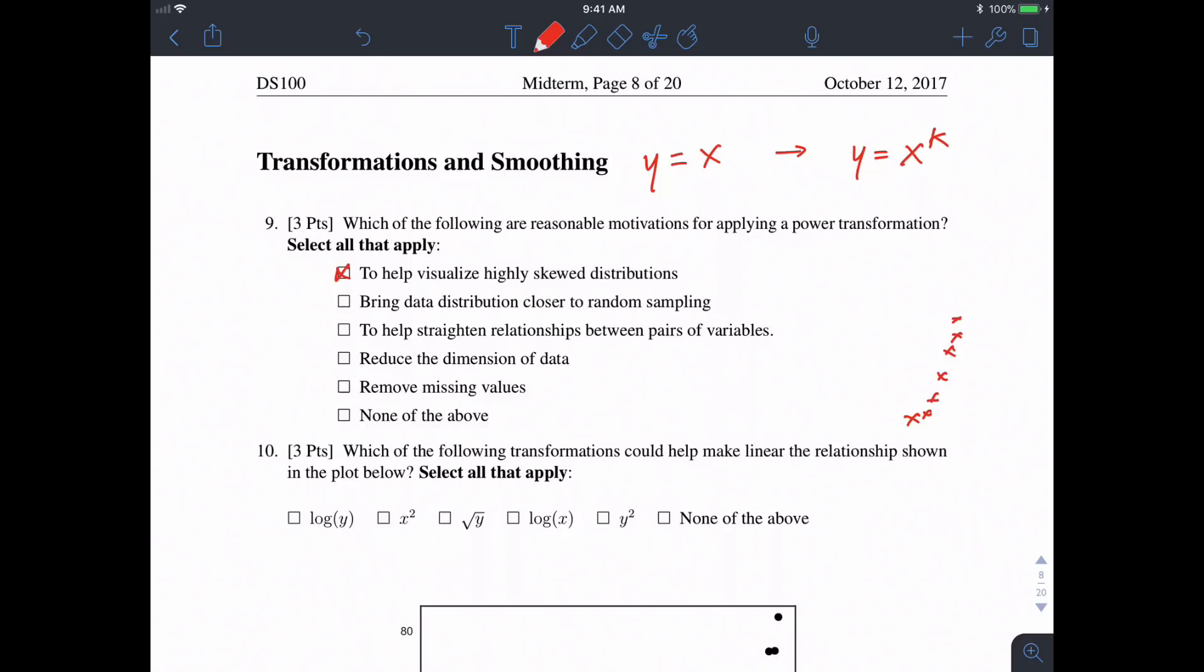To help straighten relationships between pairs of variables? Yes, that's exactly what we're doing when we're trying to linearize some set of values. Reduce the dimension of the data? No, doing any transformation doesn't do that. Removing missing values? Again, no. Applying transformations doesn't remove any of the values; it just changes the shape of our graph.